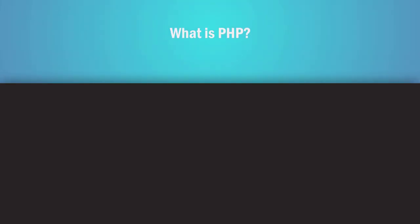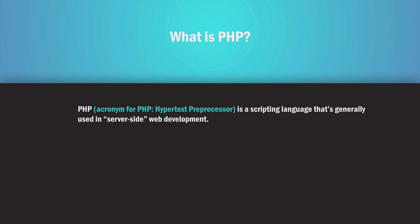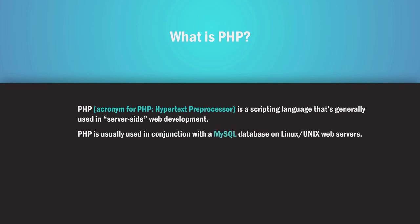In this lecture we're going to understand what is PHP, install the XAMPP server on the local system, and get started with PHP. We're not going to dive deep into PHP, just a simple overview to make you familiar with it. PHP — Hypertext Preprocessor — is a scripting language generally used in server-side web development. It's an open-source, server-side language used for creating dynamic web pages, can be embedded into HTML, and is usually used in conjunction with a MySQL database on a Linux or Unix web server.